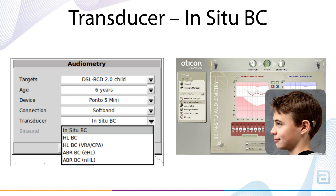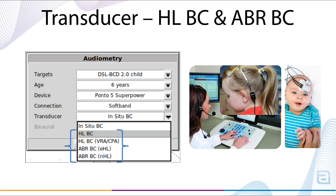Transducer sets how hearing thresholds were measured. In-situ is available for any connection type and uses hearing thresholds measured with the bone conduction device on the patient via peer tones produced by the bone conduction device and controlled from the hearing aid software. HL-BC options are for SoftBand and SoundArc fittings where in-situ thresholds cannot be measured, and hearing thresholds are bone oscillator dBHL. All HL-BC and ABR-BC transducer selections apply a skin transmission loss prescriptive target correction based on the patient's age.